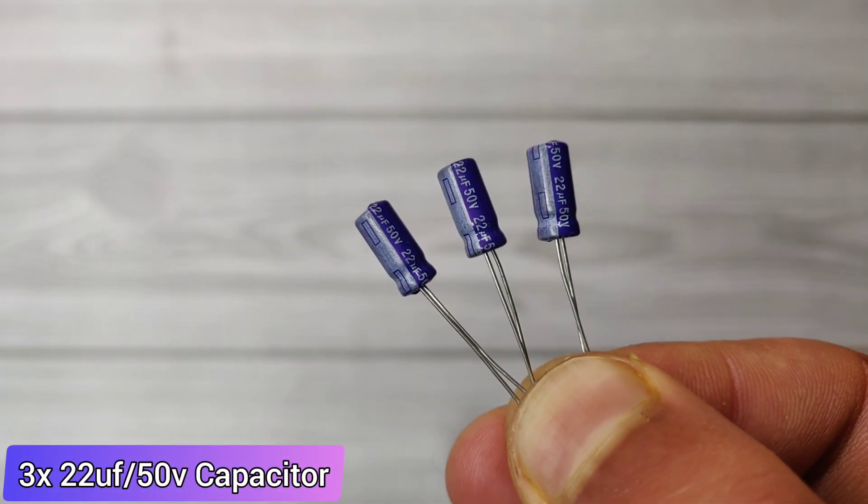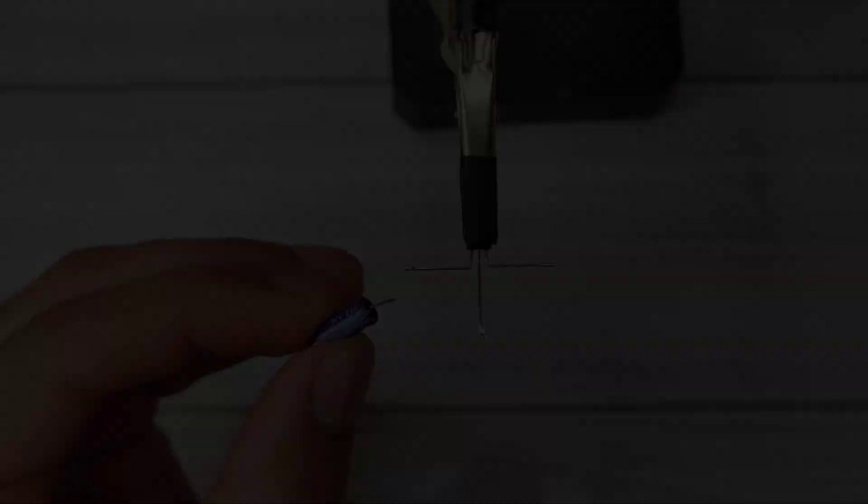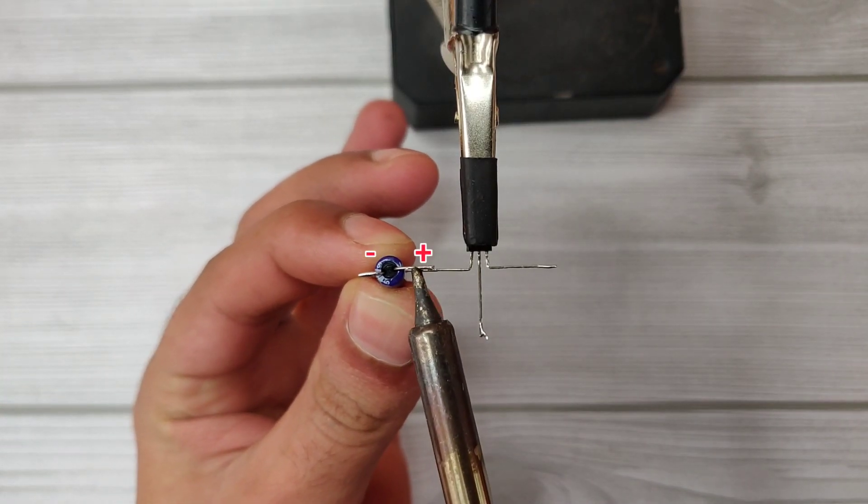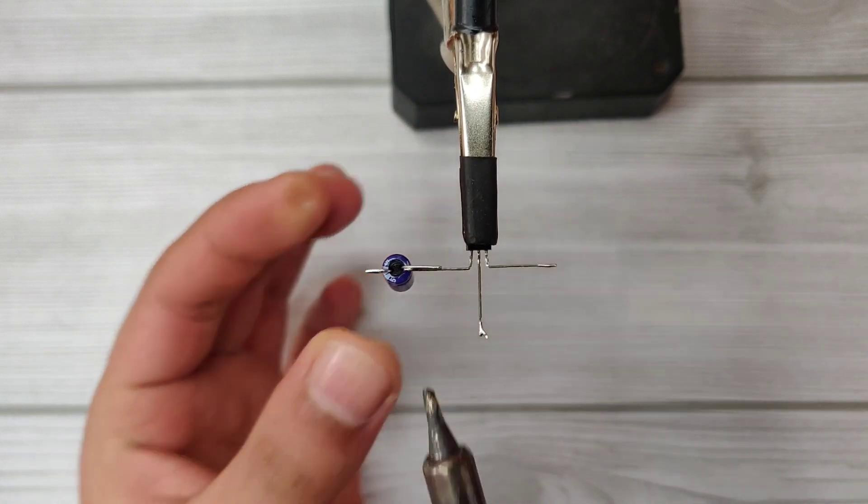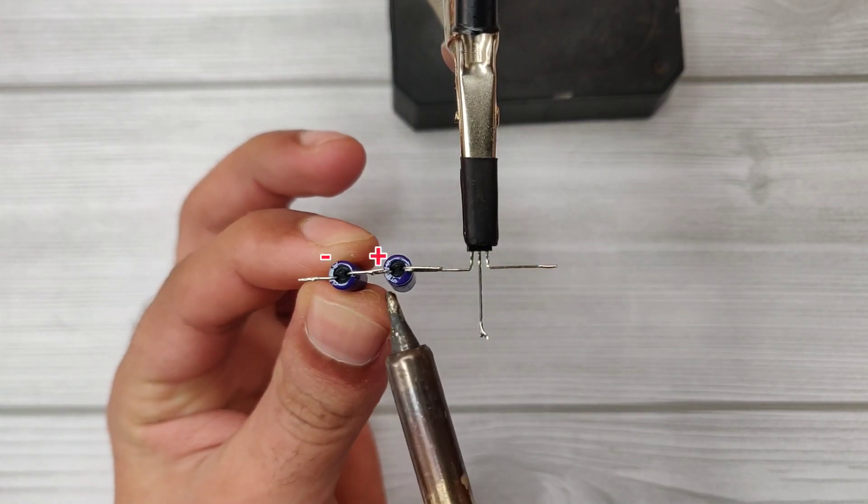Take three pieces of 22 microfarad capacitors. Solder the capacitor positive with the collector of the transistor. Solder the other two capacitors in series.